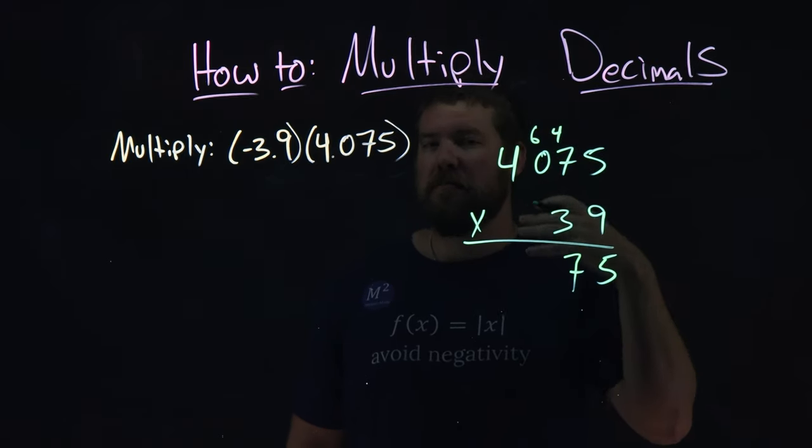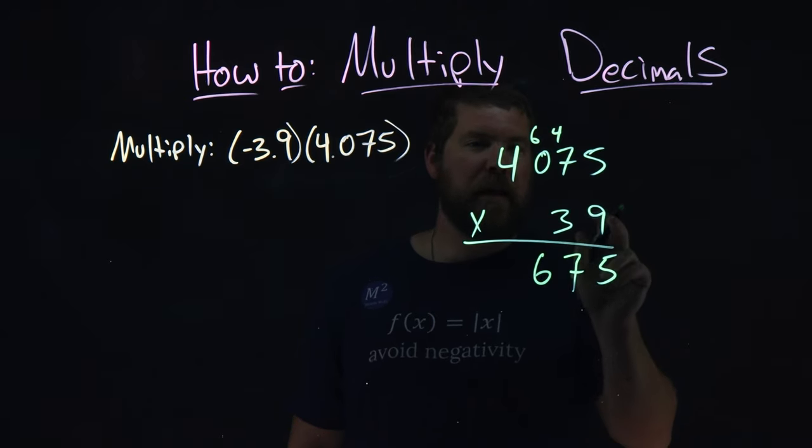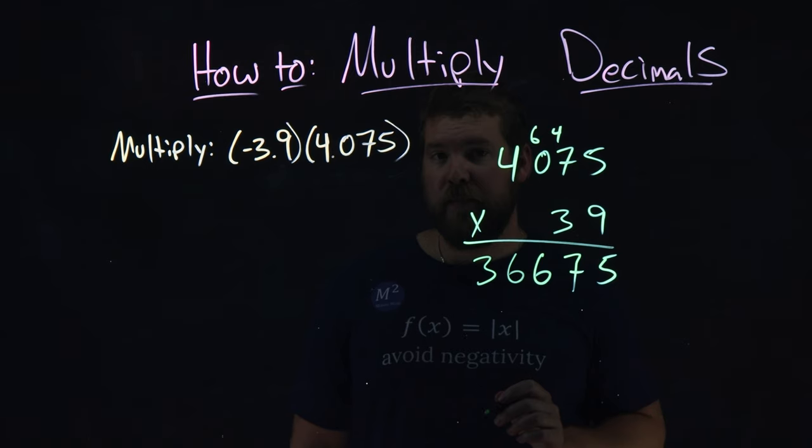9 times 0 is 0. Then we add 6 to that, we get a 6. And then 9 times 4 is 36.